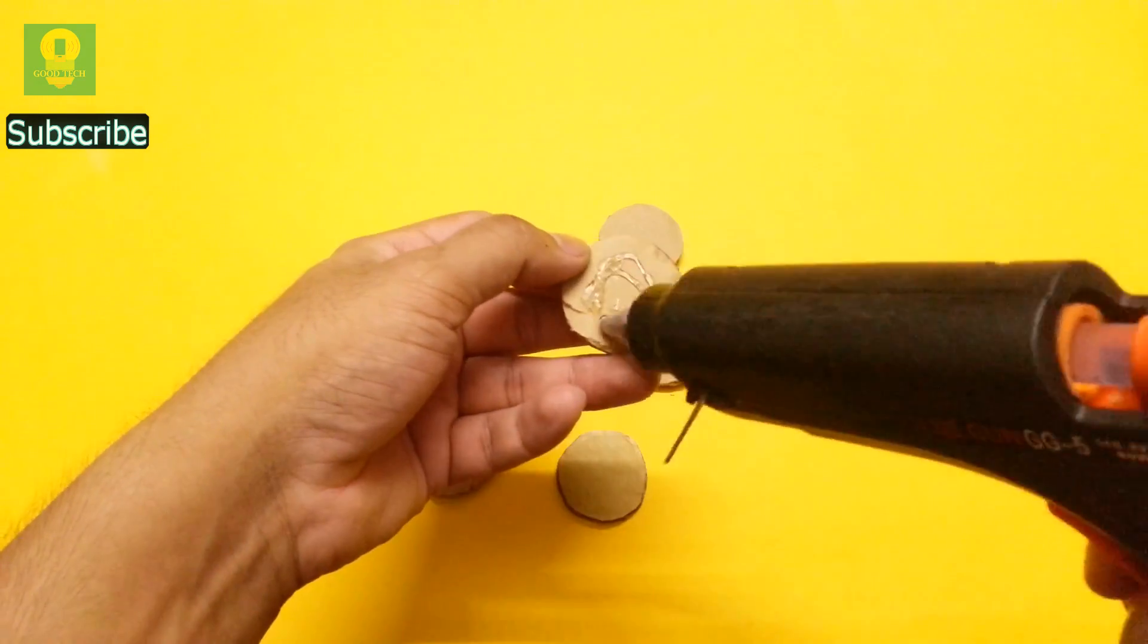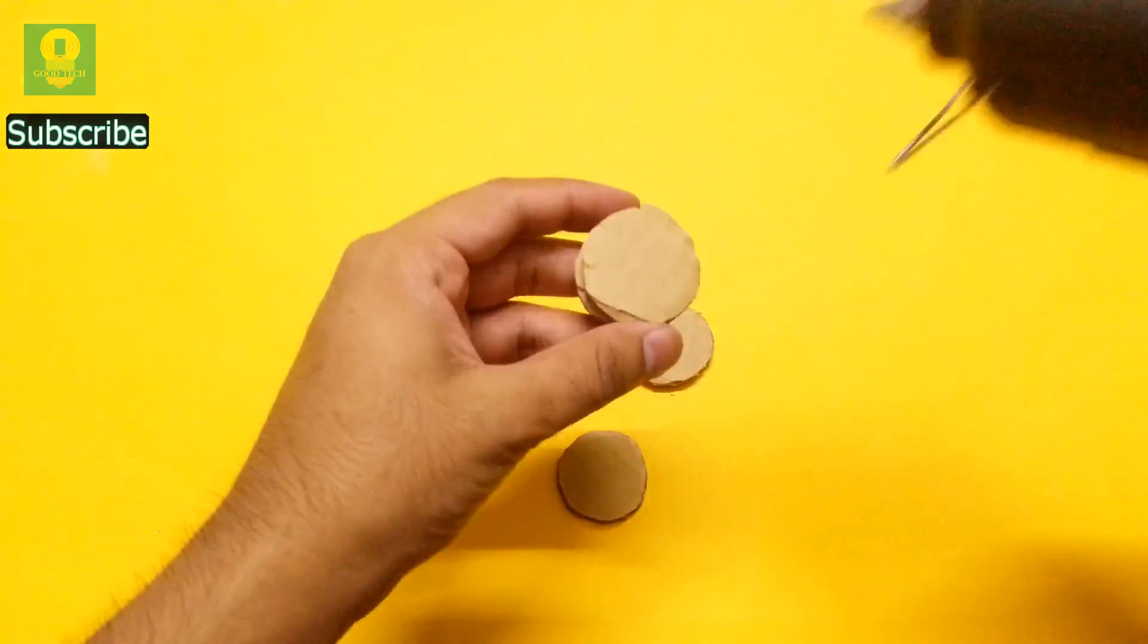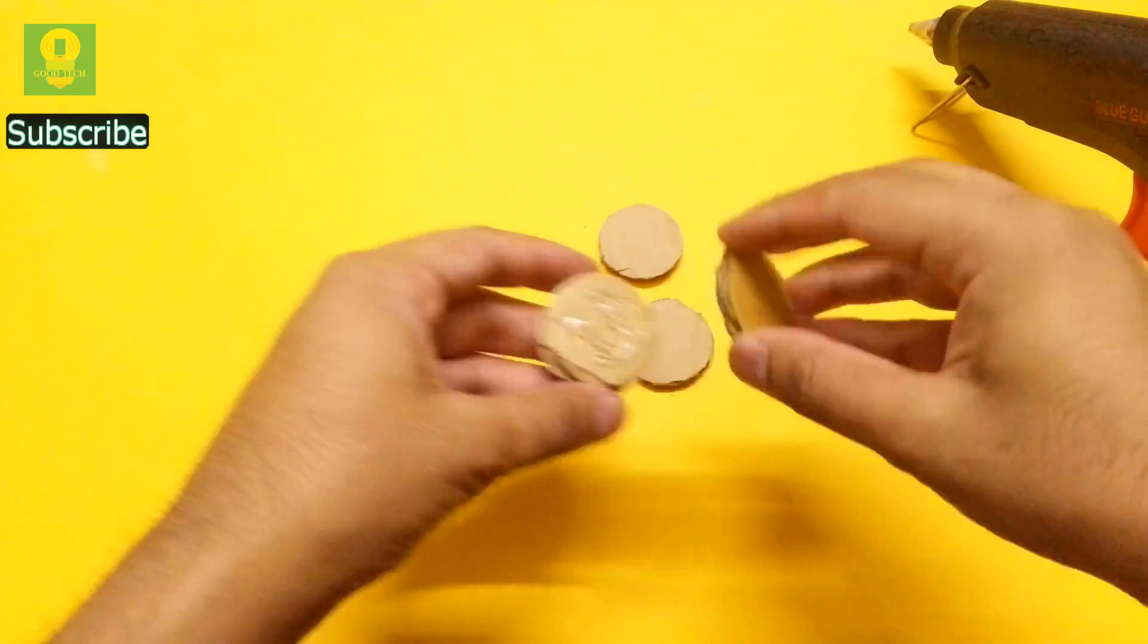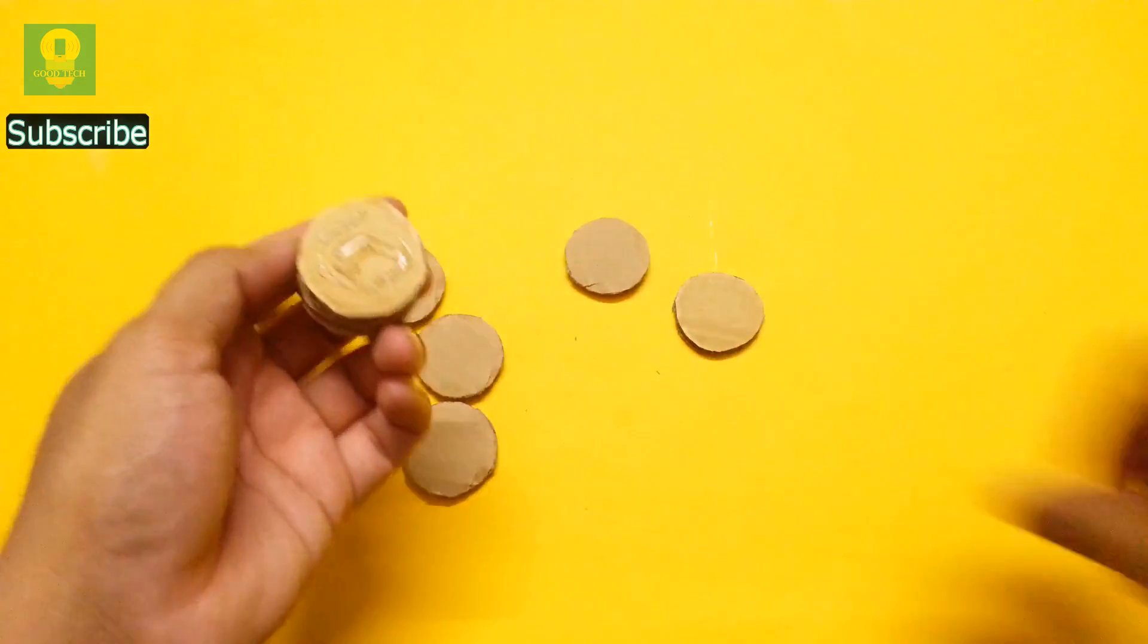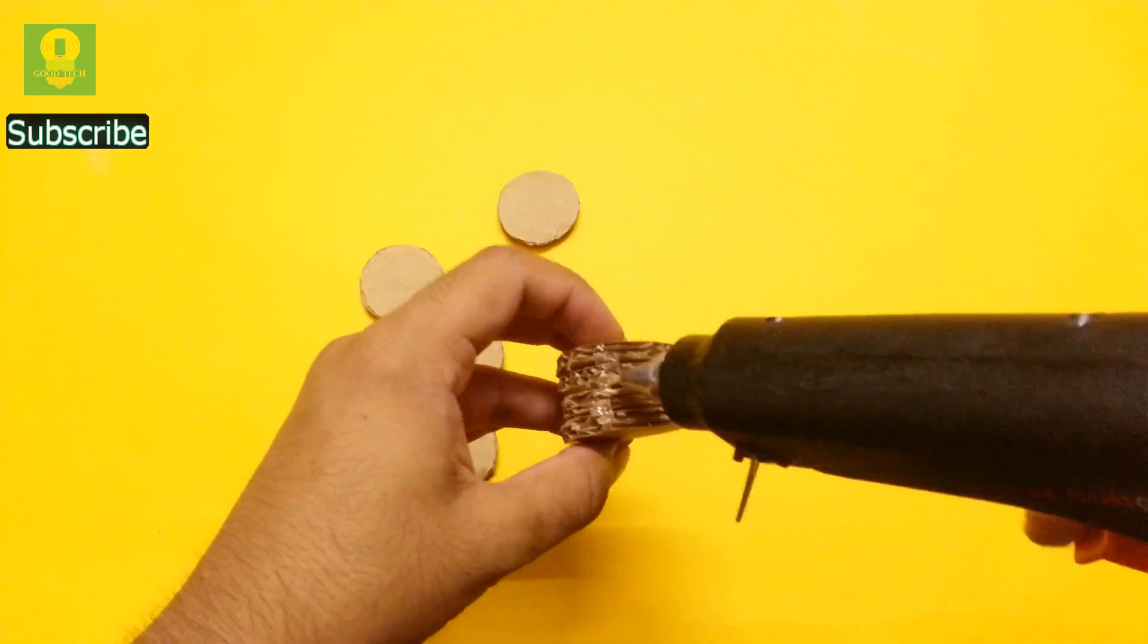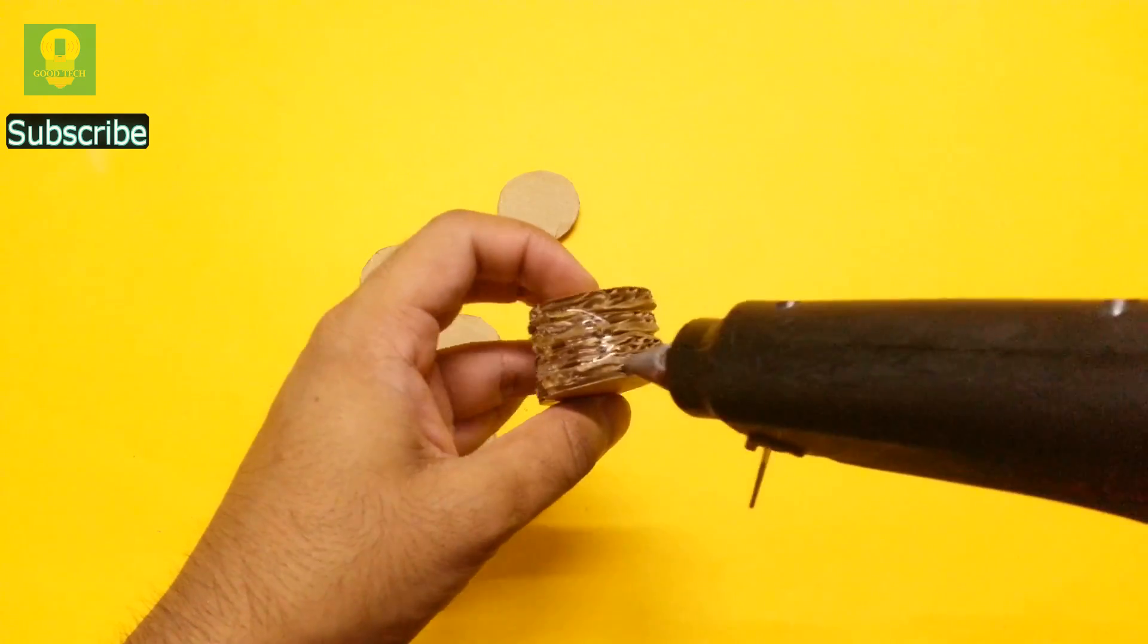Using hot glue, paste the circles one over the other to form a stack. Also, apply hot glue around the edges to get a rubber-like grip.